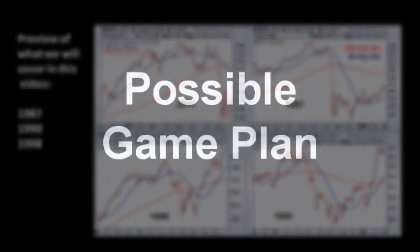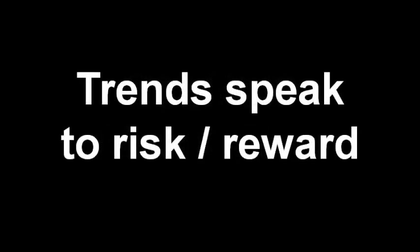Second, how we may approach the markets based on various possible outcomes, both bullish and bearish. Third, how moving averages can help us monitor long-term trends in asset prices. Fourth, how those same moving averages can help us better discern between a possible major change in trend and a sharp correction within an existing trend.